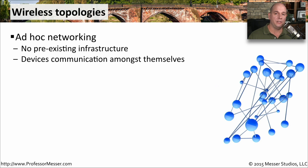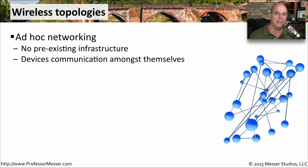There are also a number of ways your wireless device can connect to other devices. You don't have to use an access point. You could connect directly between devices using ad hoc networking. In this case, there's no pre-existing infrastructure, no access points, and no SSIDs. You're simply connecting from one device to another over the wireless network, and those devices can communicate and send information between each other without any extra equipment.